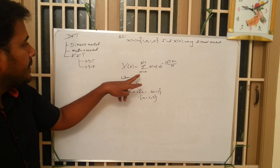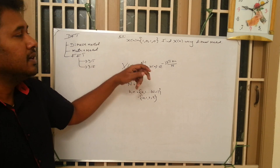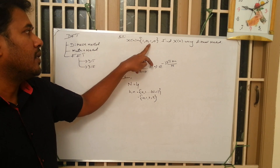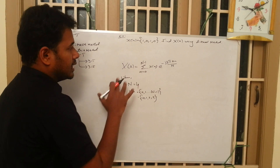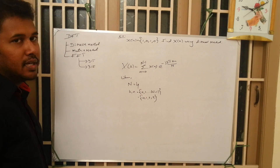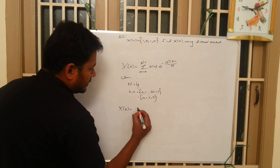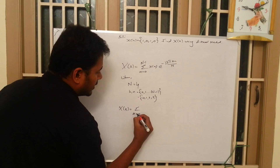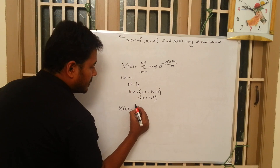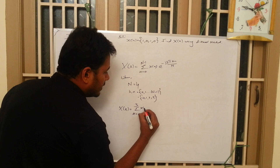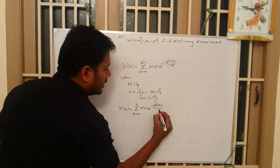Next, the values for x(n) can be found from the given question: x(0), x(1), x(2), and x(3). Now let us proceed to solve the problem. For finding X(k), first substitute the summation limit n=0 to N-1, where N is 4, so N-1 is 3. We have x(n) into e power minus j2πkn/4.